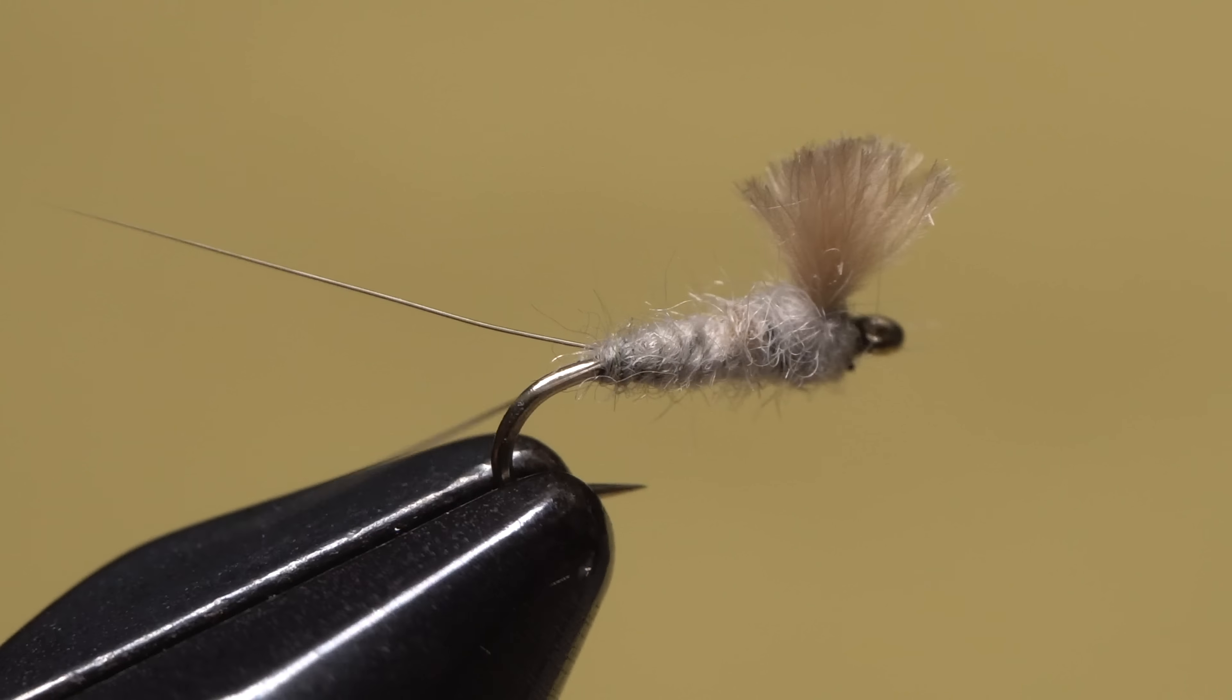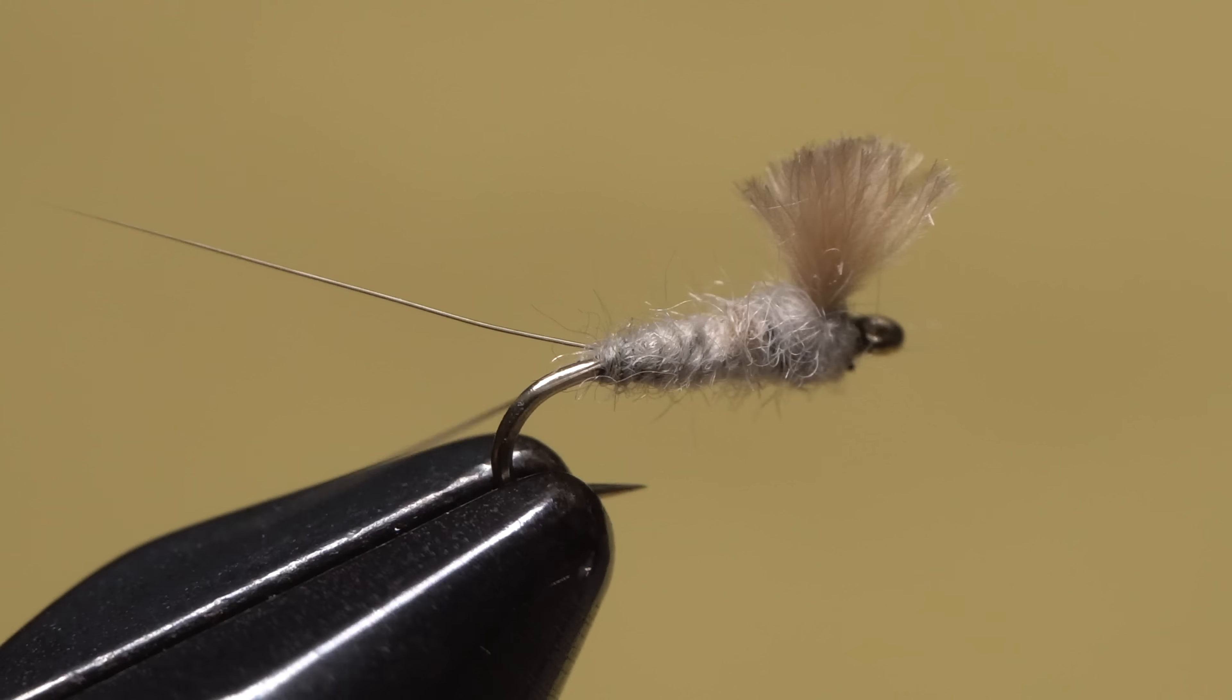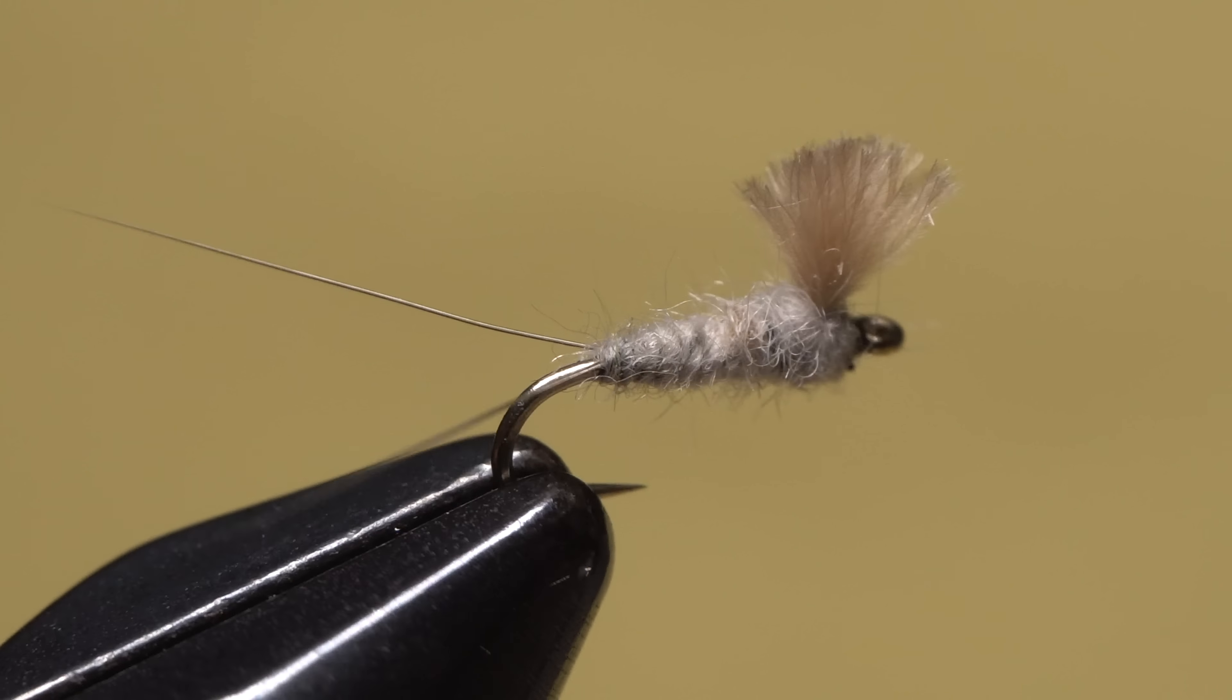And that's my version of Rim Chung's RS2. Splayed tail, segmented abdomen, slightly built up thorax, and a short emergent wing. It's one of those flies you never seem to have enough of.